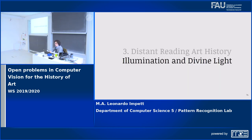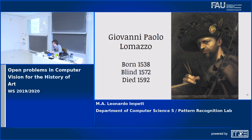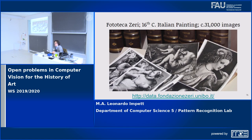The last thing I'll go through is divine light. A large part of art history is comparing old theory with old images, not just modern theory with old images. I took the theory of divine light by Giovanni Paolo Lomazzo — the first and only person to write a theory of how divine light should work in paintings in the 16th century — and looked at how his theory relates to practice at the time, through a well-curated dataset of 31,000 paintings from the Phototeca Zeri, published with start and end dates and iconographic categories.